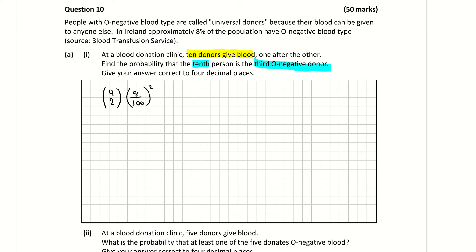So that's my probability of success. My probability of failure, i.e. not O negative, is 92% or 92 over 100 or 0.92. And that's the remaining 7 people.